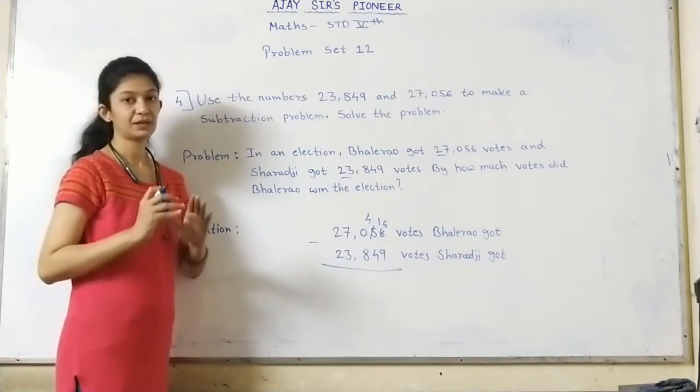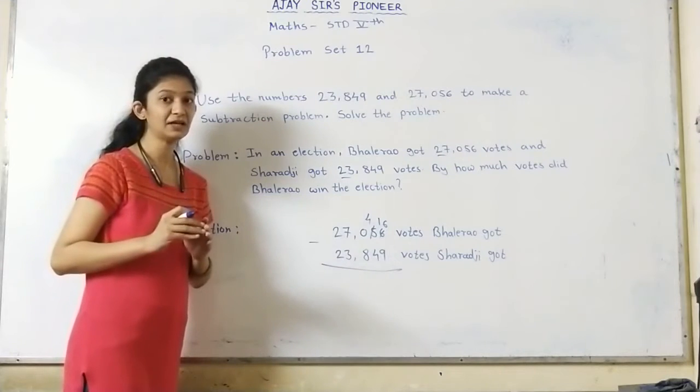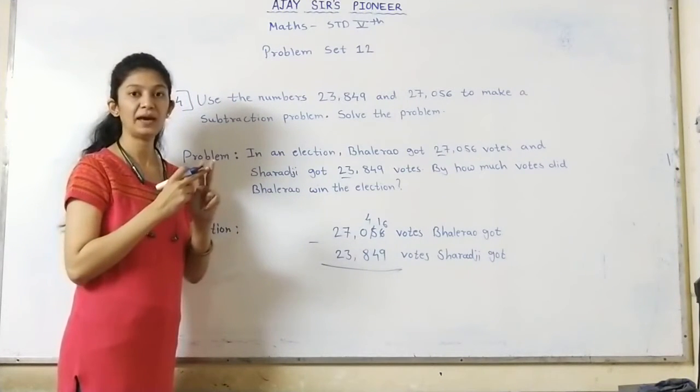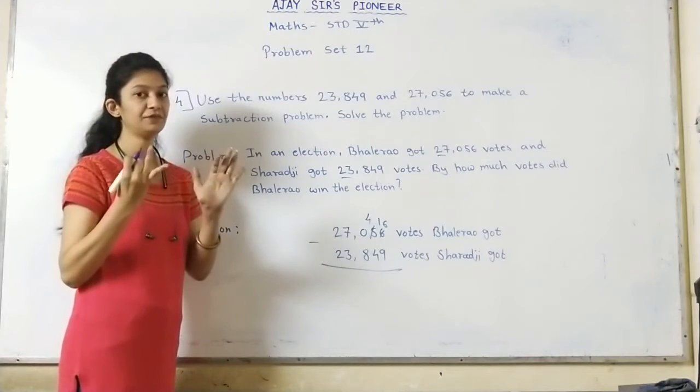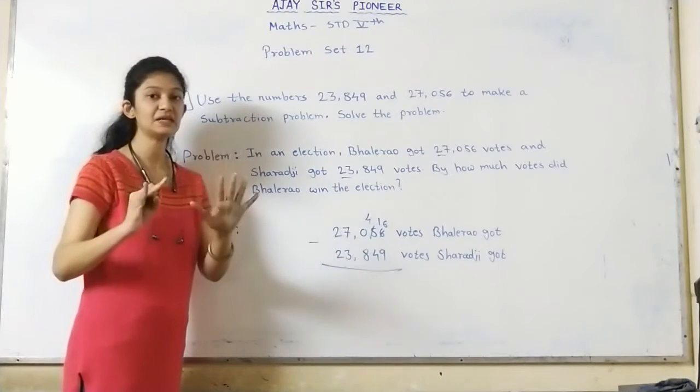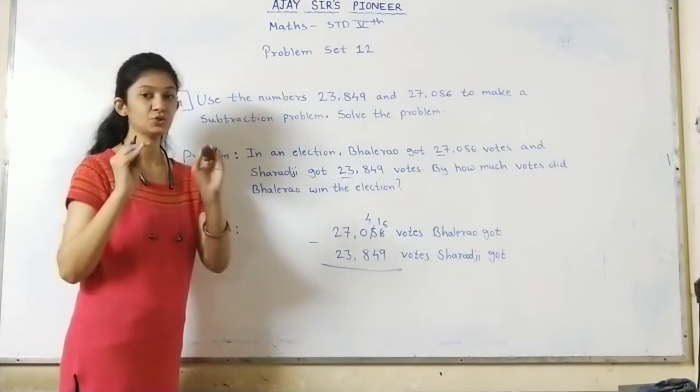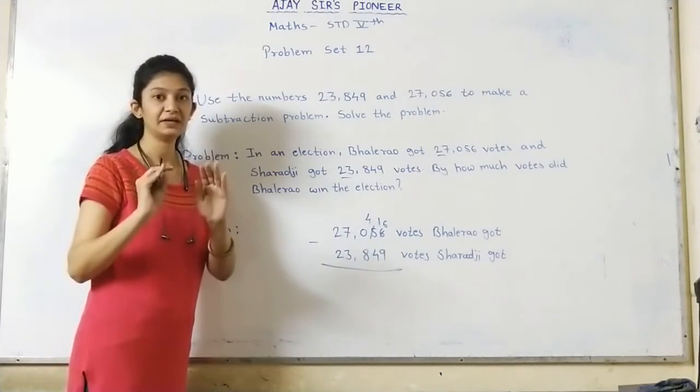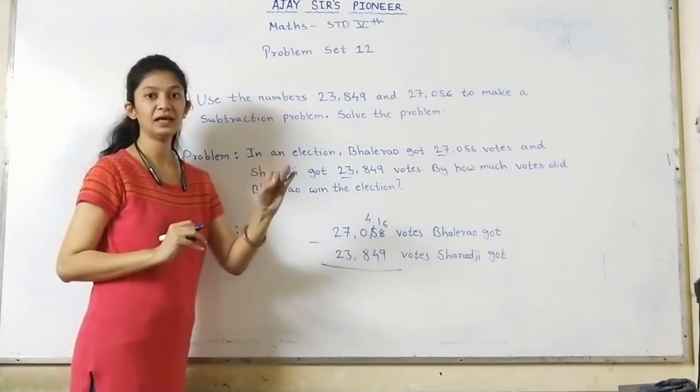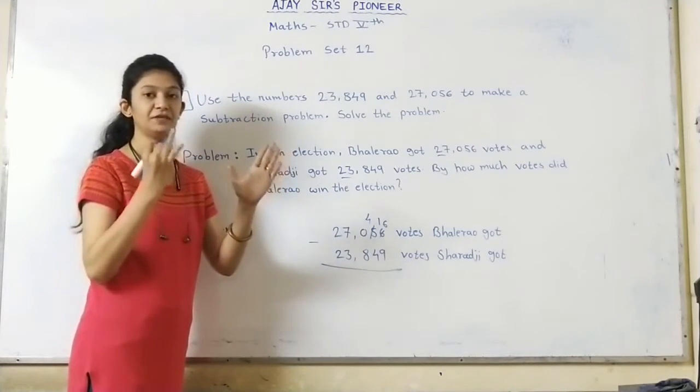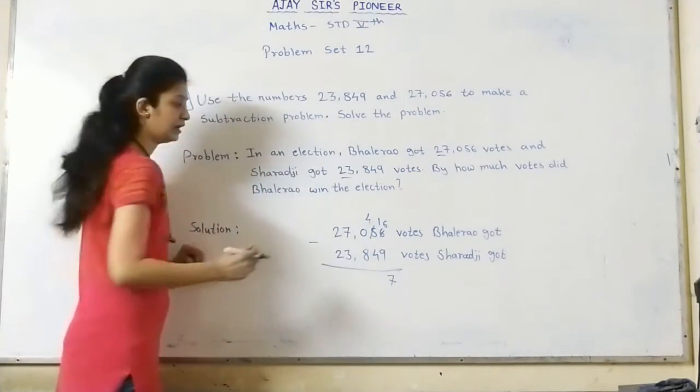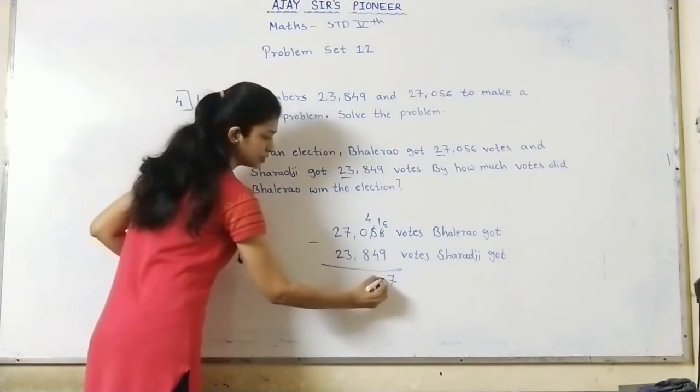16 minus 9. Count the numbers after 9 till 16: 10, 11, 12, 13, 14, 15, 16. So the answer is 7. Now 4 minus 4 equals 0.